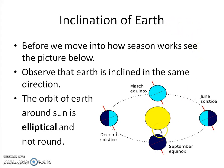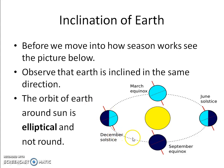Before we move on to understand how seasons work, let's understand the inclination. In the diagram showing Earth at different locations in its orbit, you will see that the Earth is always tilted to one particular side. When it is here, it is tilted this way; when it comes around to the other side, it is still tilted in the same direction. If you find this difficult, pause the video, think for a while, and use your imagination power to work it out.